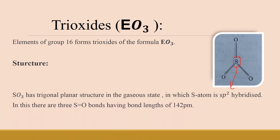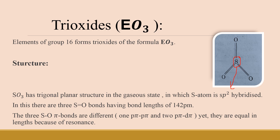In SO3 there are three S=O bonds, all having the same bond length of 142 picometers. The three S–O pi bonds are different in nature: one pi bond is due to p pi–p pi bonding between the p orbital of sulfur and the p orbital of oxygen, and the other two pi bonds are due to d pi–p pi bonding using the vacant d orbital of sulfur.